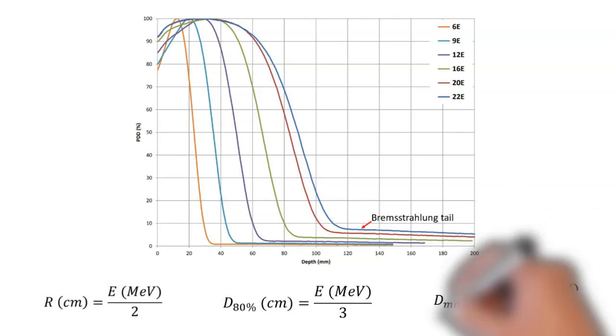Another rule of thumb here is that the depth of maximum dose is often equal to the energy divided by four. So in the case of, let's look at the 12 MeV electron here, 12 divided by four is going to be three, and you can see that Dmax is about at three centimeters. So that's another useful rule to keep in the back of your pocket for board exams or just quick back of the envelope calculations.